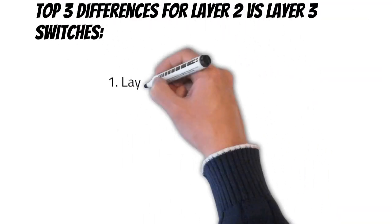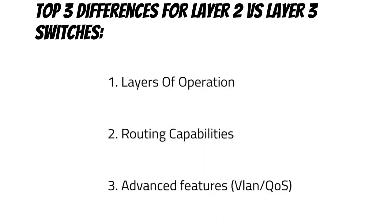So there you have it — a troubleshooting tip straight from Network Ninja. I gave you the top three key differences between layer 2 and layer 3 switches. Understanding these fundamentals is important for building your skills and knowledge for the CCNA exam and for success in your career. Keep in mind that layer 2 is suitable for smaller networks, while layer 3 is more suitable for larger networks requiring advanced features such as VLANs and quality of service.